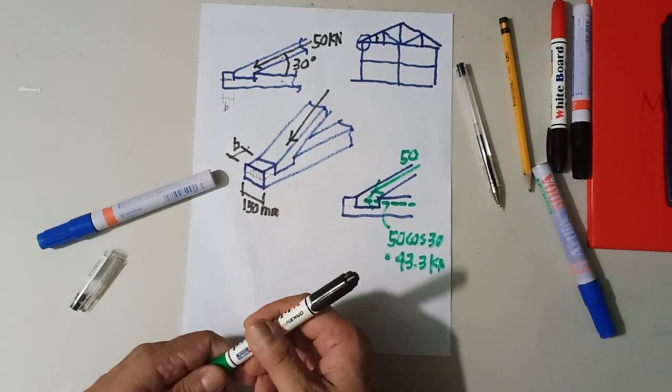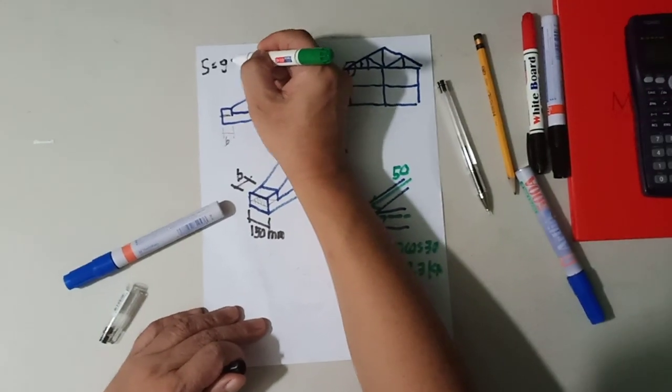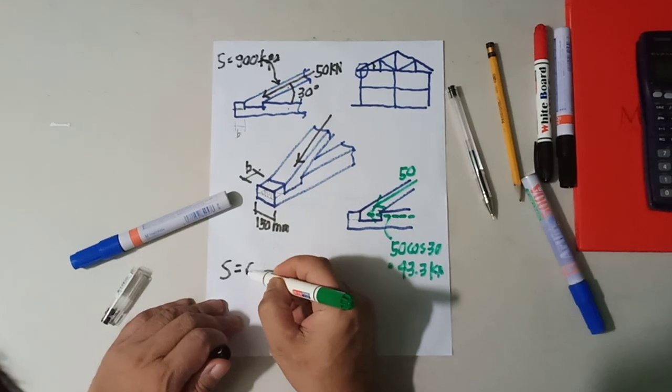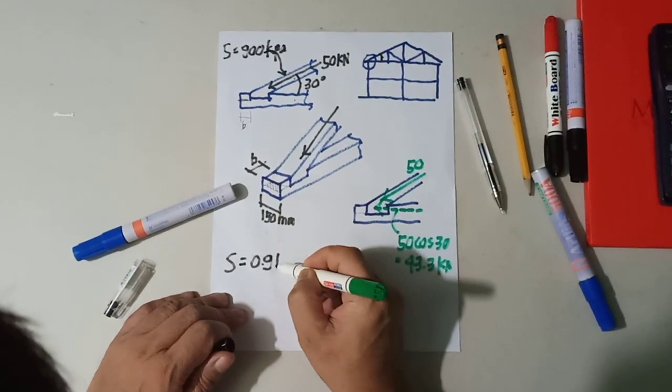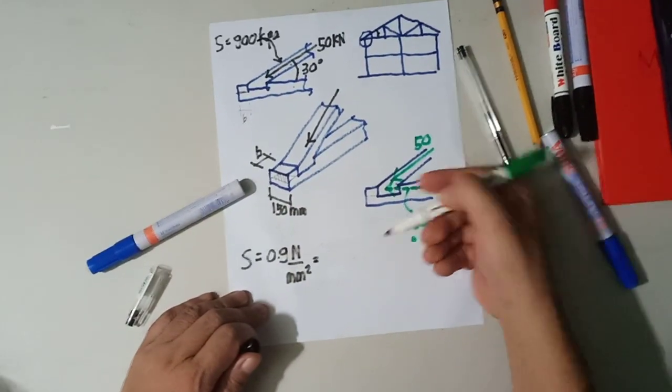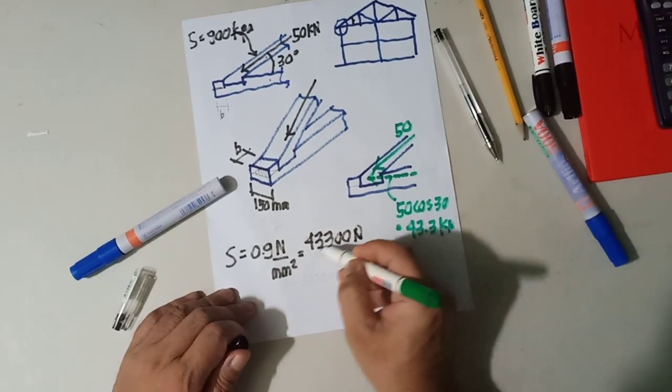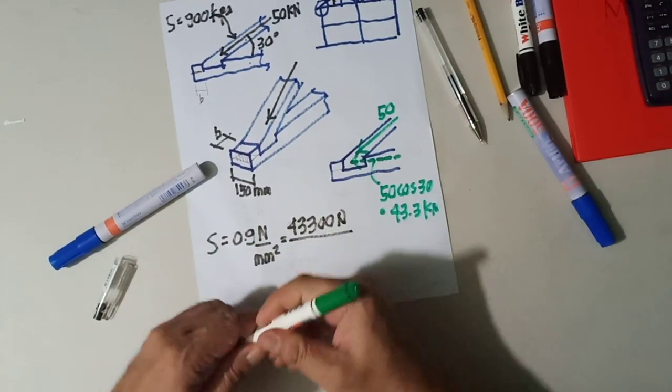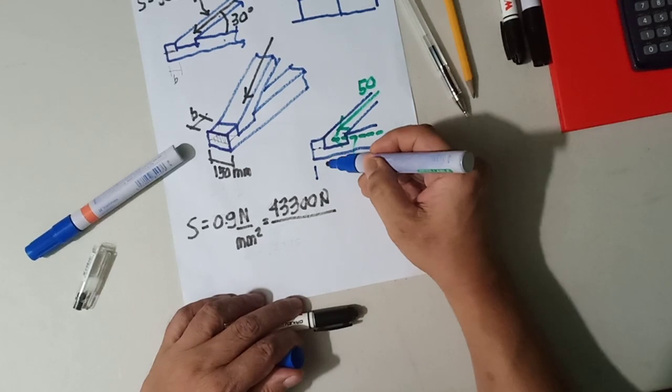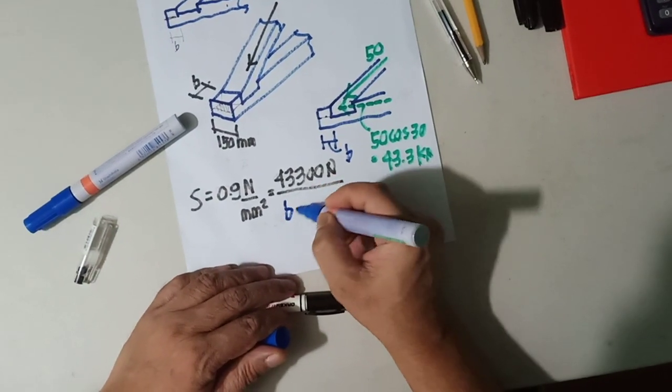So it was given that the stress of that top chord is equivalent to 900 kilopascal, which is the same thing as 0.9 megapascal or newton per millimeter squared. You have a force, the horizontal force of 43.3 or 43,300 newtons, that is the force divided by the area. And the area that will slide, the sliding area is this one, covering a thickness of B and a width of 150, so it is B times 150.